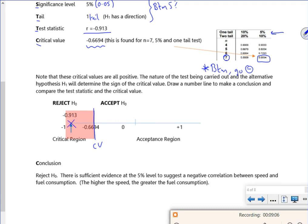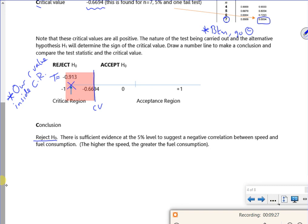Our test stat is minus 0.913. Our test stat is inside the critical region. So our R value is inside the critical region. So if that's the case, I reject H₀. So there is sufficient evidence at the 5% significance level to suggest a negative correlation between speed and fuel consumption.